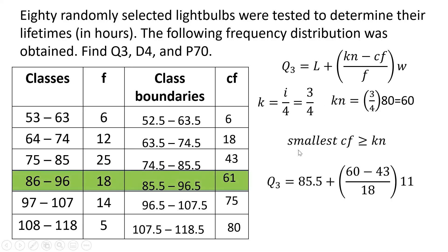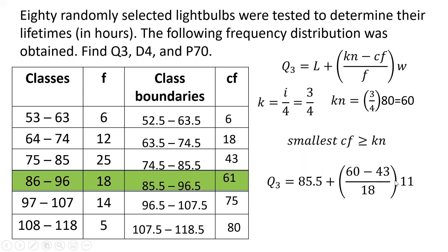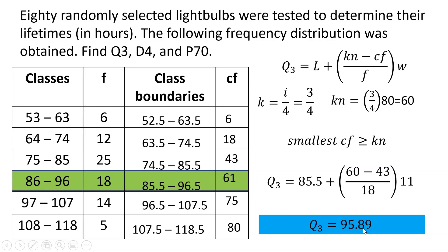Substituting into the formula: the lower class boundary is 85.5, plus (kn = 60 minus CF = 43) over the class frequency of 18, times the class width of 11. The class width of 11 is obtained by subtracting consecutive lower class limits, e.g., 64 minus 53 = 11. Computing this, quartile 3 equals 95.89.